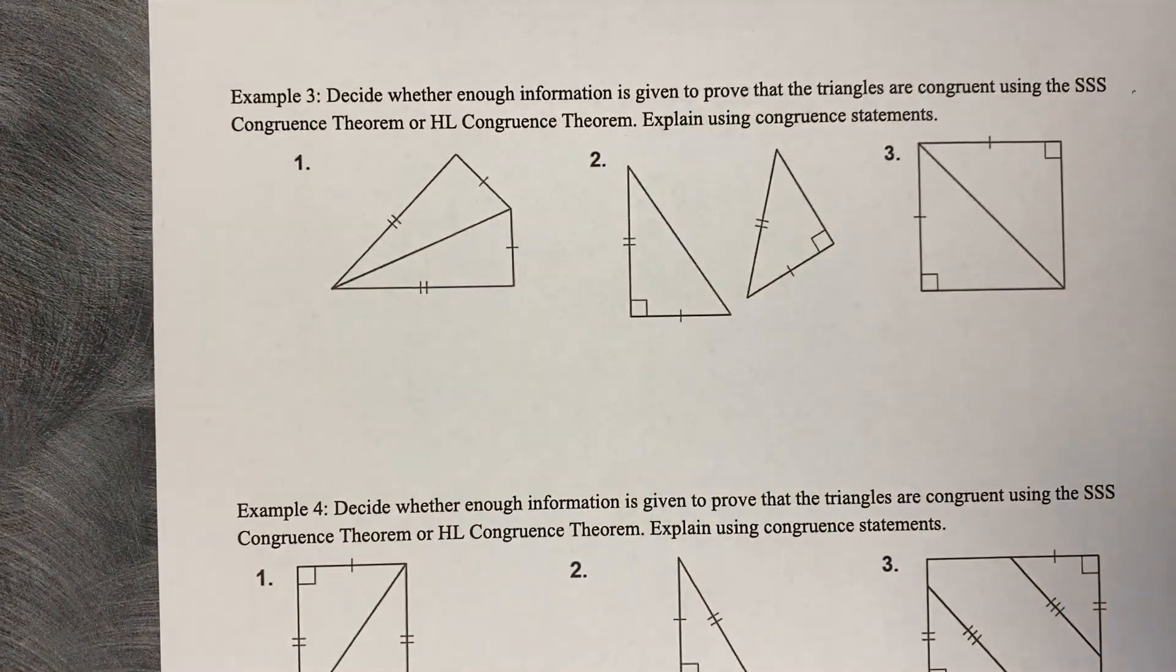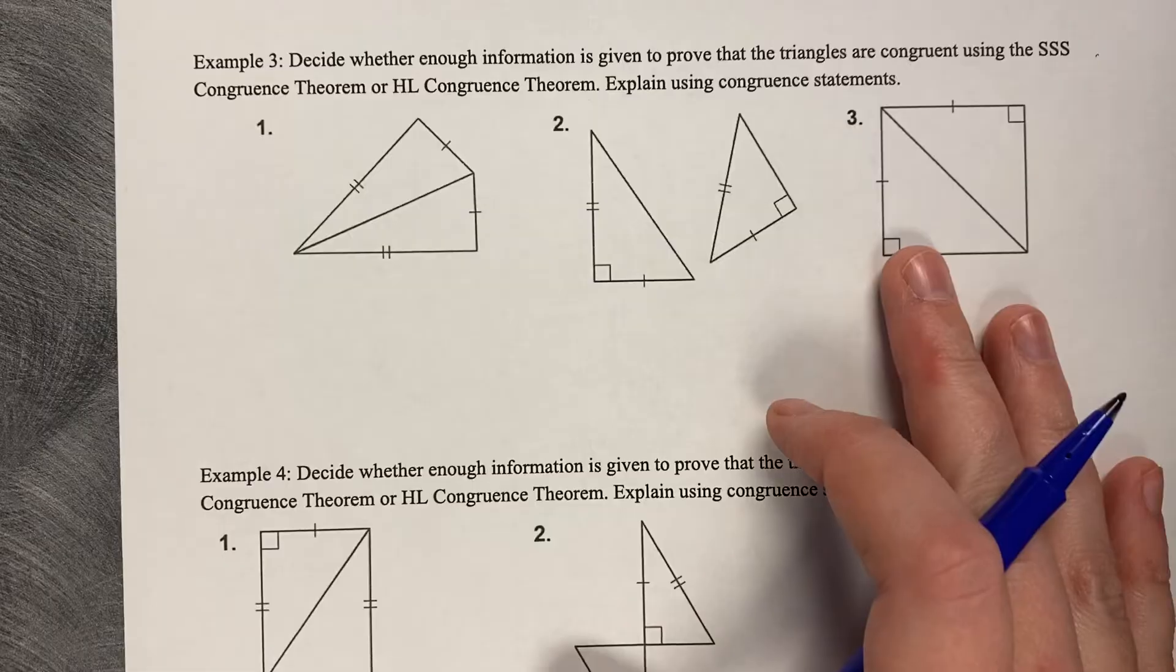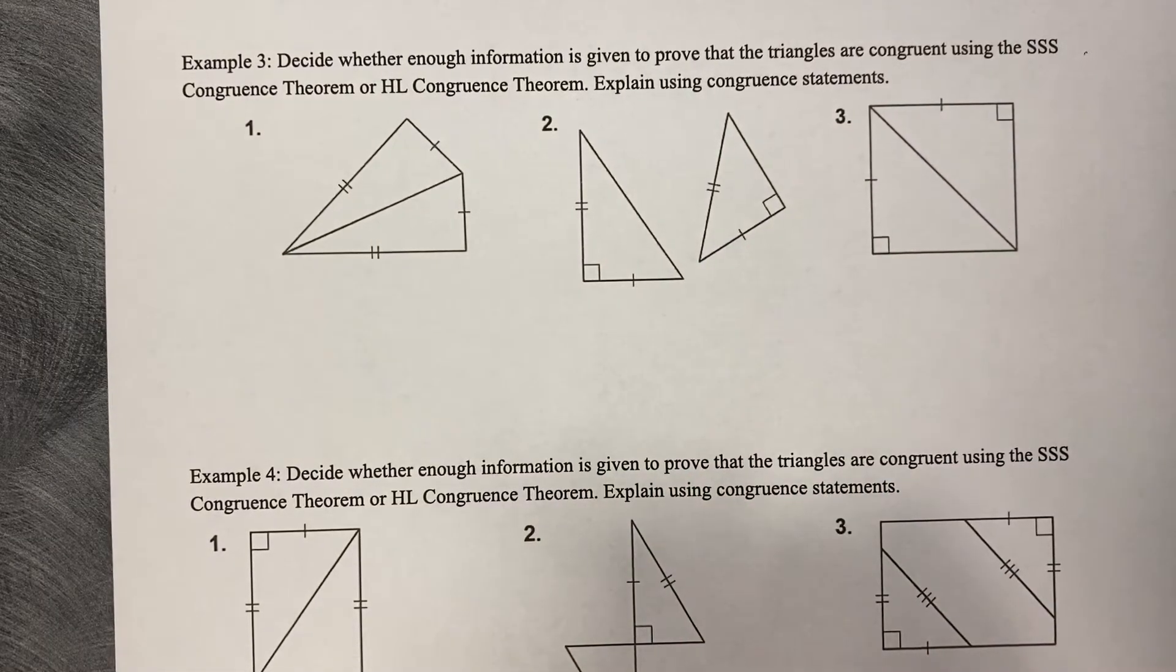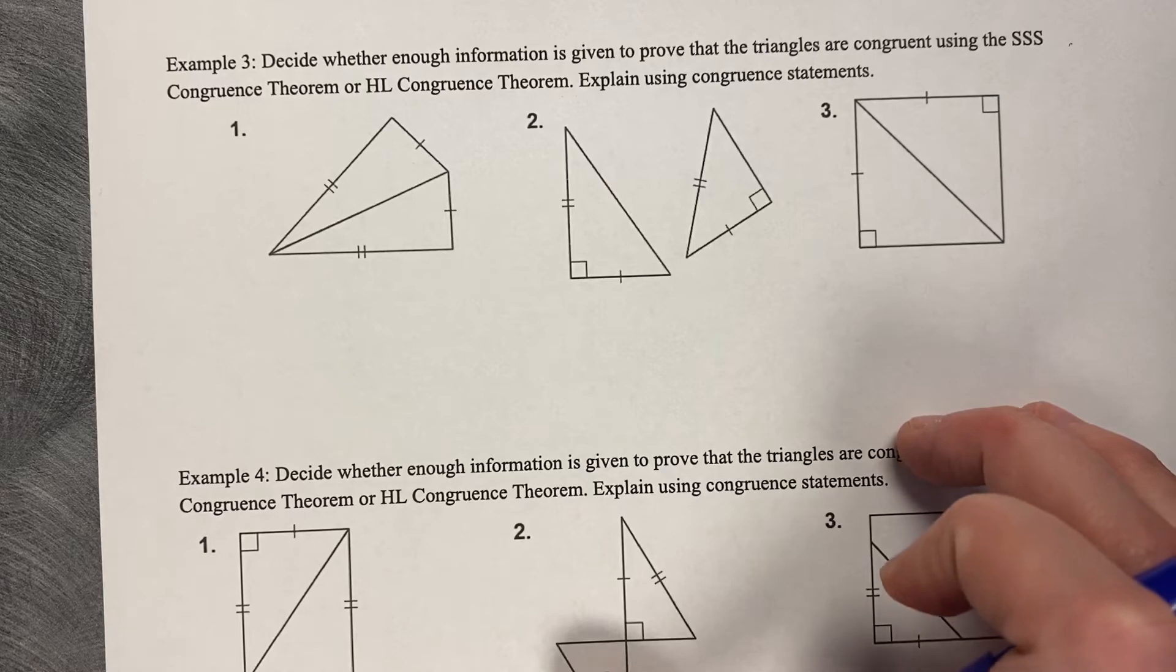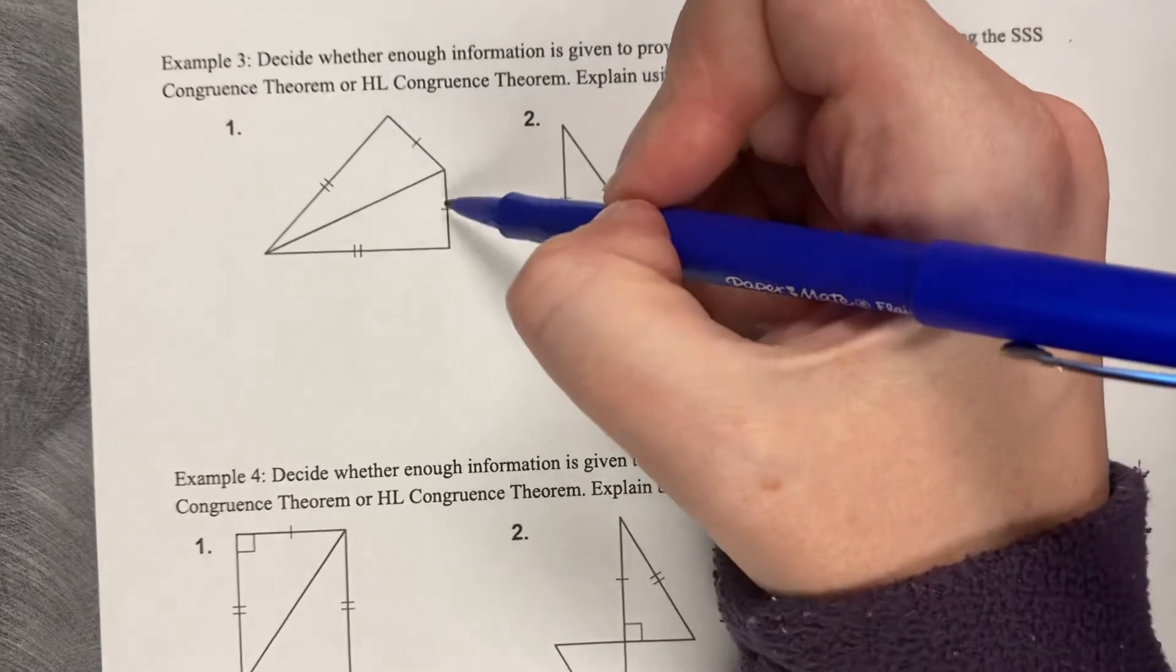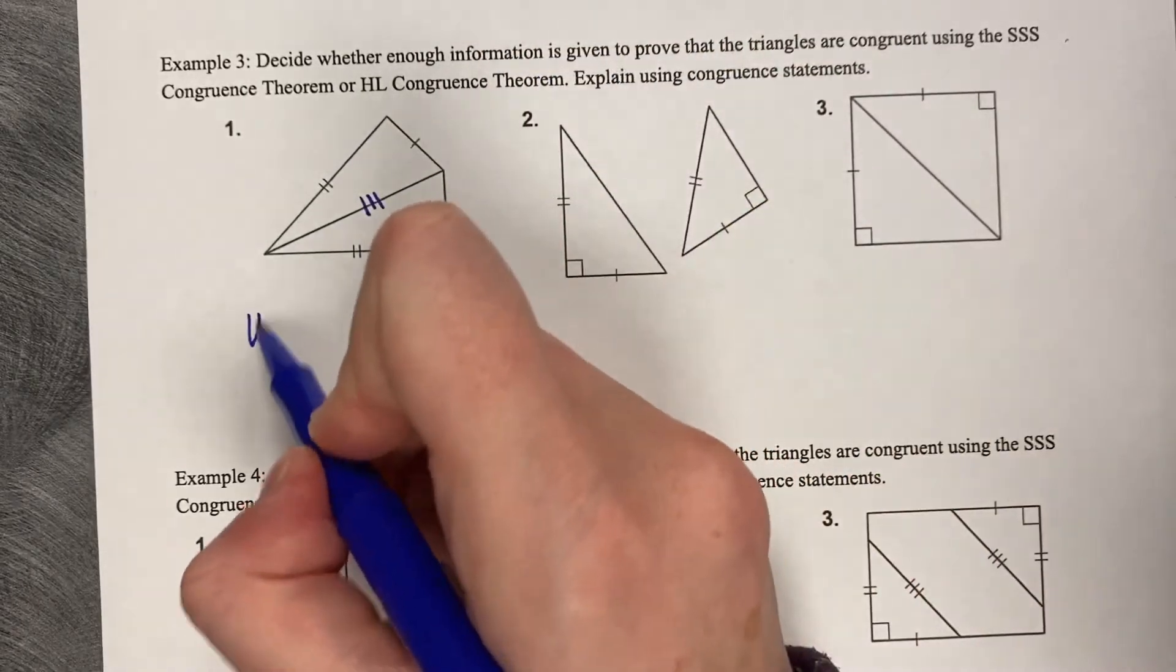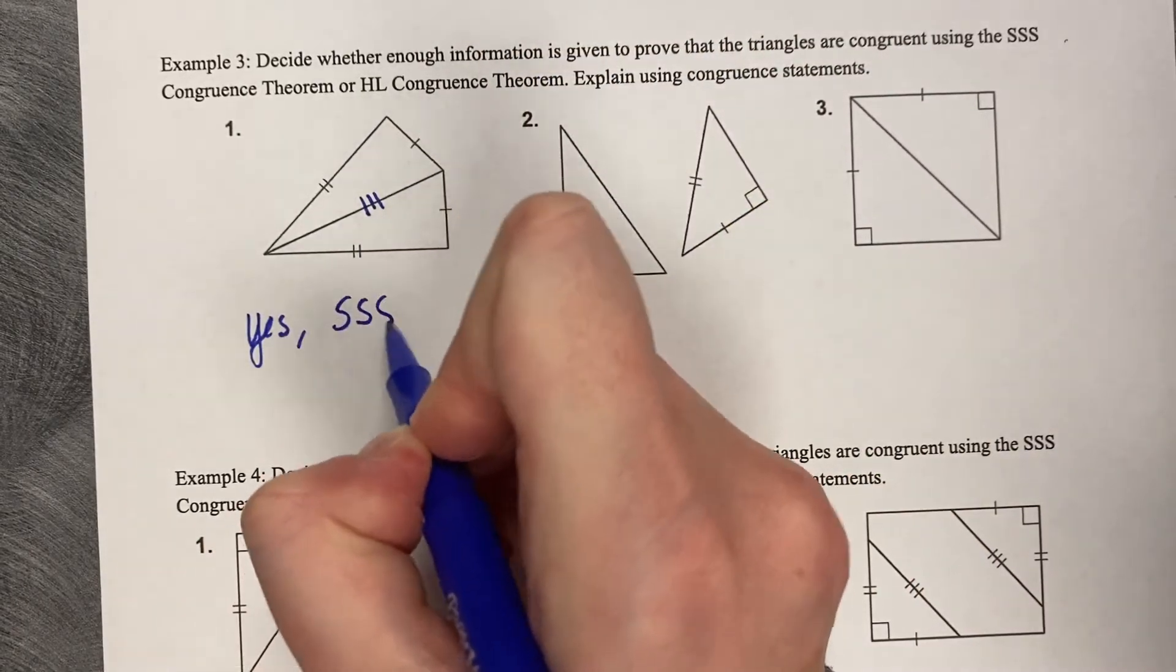Now we're going to try a bunch of examples of are they congruent or not. It's going to be yes or no, and then either SSS or HL today. Number one: one for one, two for two, and a shared side. So yes, by side-side-side.